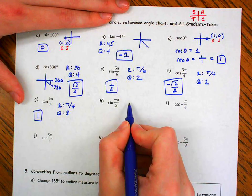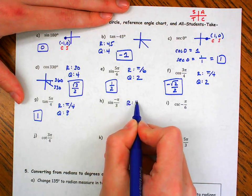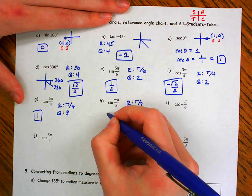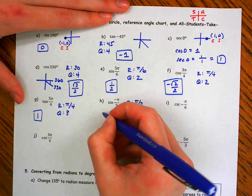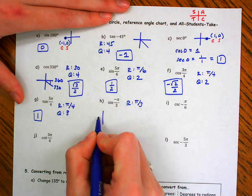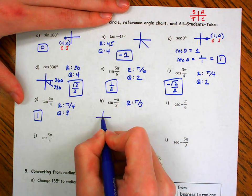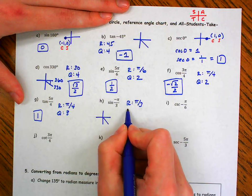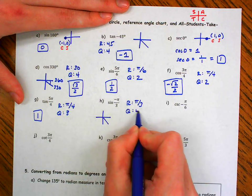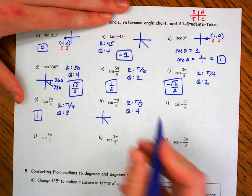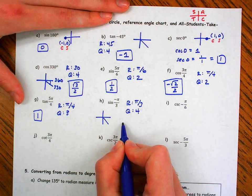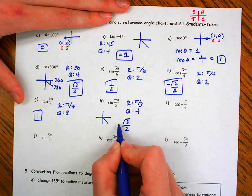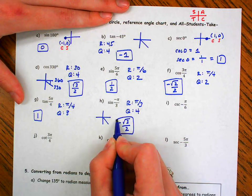H: my reference angle is pi over 3. If I were to draw a quick picture, my pi over 3 would be in the first quadrant, but it's negative, so it's going to be in quadrant 4. Sine of pi over 3 is root 3 over 2. Sine in the fourth quadrant is negative.